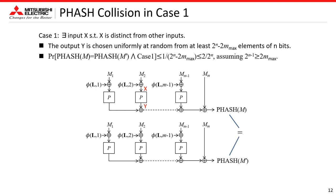In Case 1, there exists an input that is distinct from all other inputs. For example, in this figure, the input x is distinct from other inputs, so the output y is not cancelled out and affects the collision probability of PHASH. As the output is chosen uniformly at random from at least 2^n minus 2·n_max elements, the collision probability is bounded by this probability.